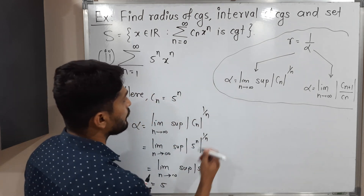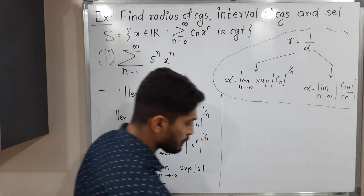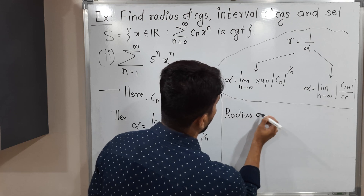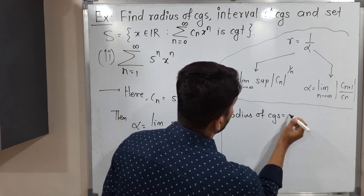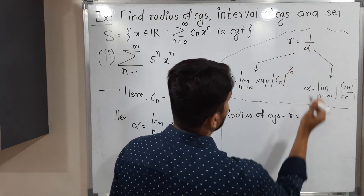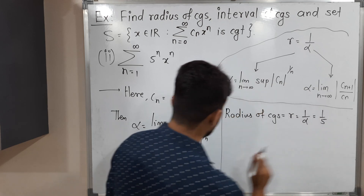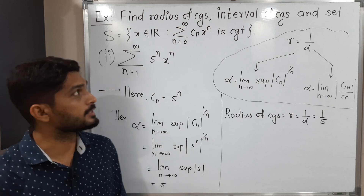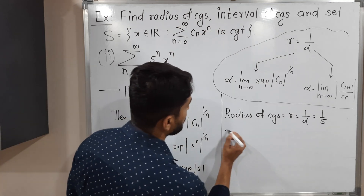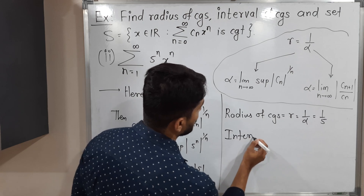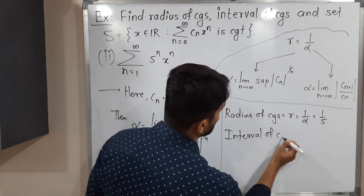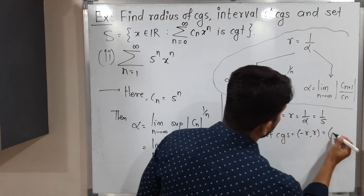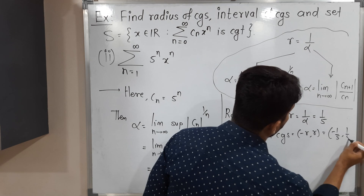We got alpha = 5. Radius of convergence R equals 1 by alpha, which is 1 by 5. Now for the interval of convergence: its formula is (−R, R). Since R = 1/5, the interval of convergence is (−1/5, 1/5).